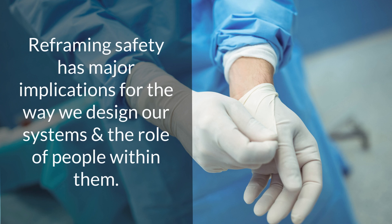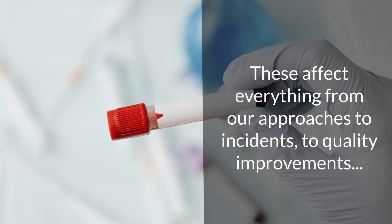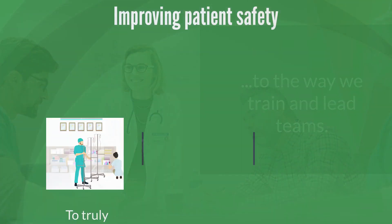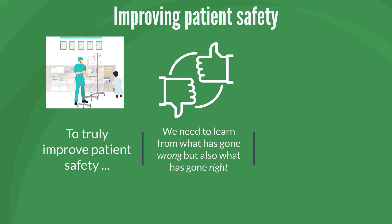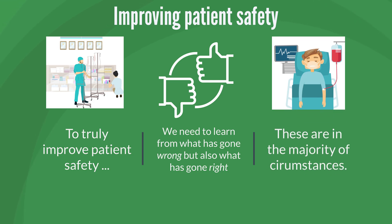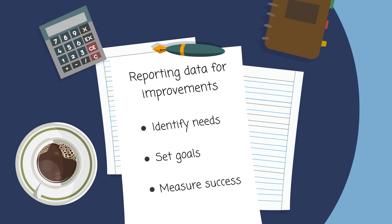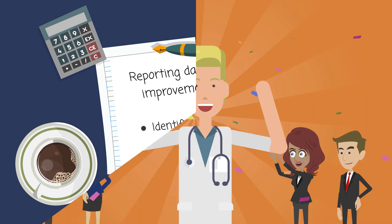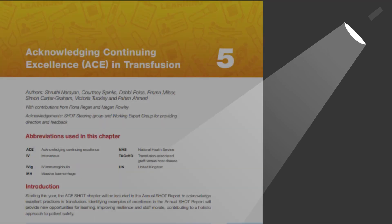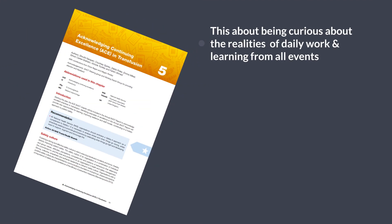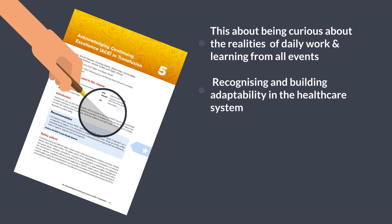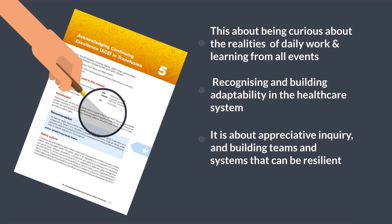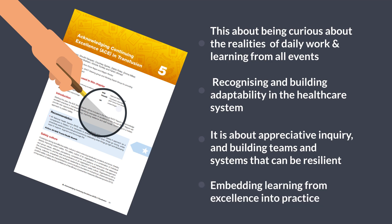The reframing of safety has major implications for the way we design our systems and the role of people within them. These affect everything from our approaches to incidents to quality improvements to the way we train and lead teams. To truly improve patient safety we must learn not just when things go wrong, but also from what goes right, which is in the majority of circumstances. We are reasonably good at reporting and using data to inform improvements, but we do not do enough to acknowledge continuing excellence in transfusion practices. SHOT includes a chapter on learning from excellent practices, and this is about being curious about the realities of daily work, learning from all events, recognising and building adaptability, appreciative inquiry, and embedding learning from excellence into practice.